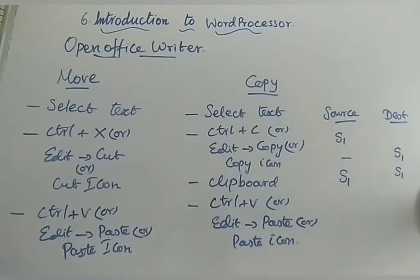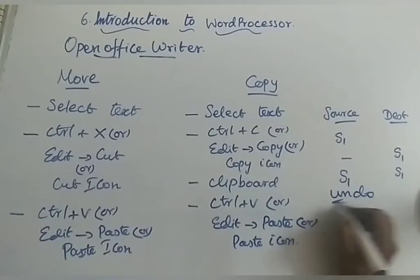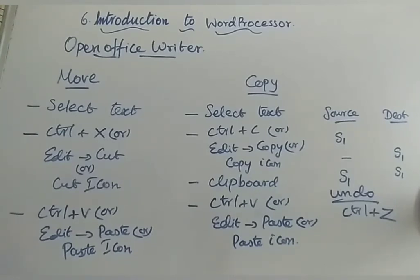We have also discussed the shortcut keys for cut, copy, and paste. Another important shortcut is Undo — the shortcut key is Ctrl+Z. Undo is used when you have accidentally performed an action and want to revert to the previous state. Under paste, there is also another option called Paste Special.